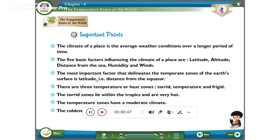The climate of a place is the average weather conditions over a longer period of time. The five basic factors influencing the climate of a place are latitude, distance from the sea, humidity and winds.